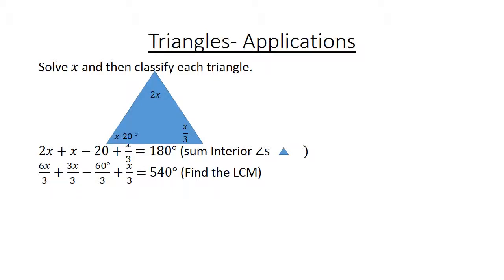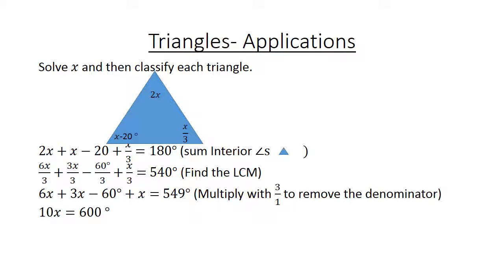Because it's a fraction, we're going to find the lowest common multiple. 6X over 3, 3X over 3 minus 60 over 3 plus X over 3 equals 540 degrees. We find the lowest common multiple. Now you have 6X plus 3X minus 60 plus X equals 540. We multiply with 3 to remove the denominator. 10X equals 600 degrees and X equals 60.